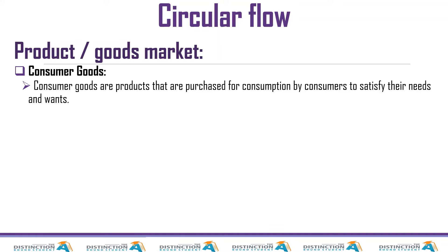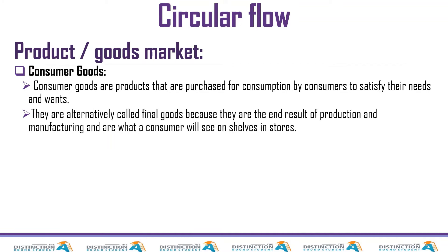Consumer goods are products that are purchased for consumption by consumers to satisfy their needs and wants. They are alternatively called final goods because they are the end results of production. When capital goods are purchased by businesses — we call that capital formation — the goal is to produce a consumer good. Like factories that manufacture clothes or cars: those clothes and cars are consumer goods, so they are the end result — final goods. Examples include clothes and food.